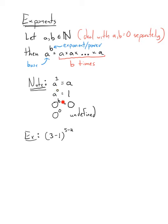Zero to any counting number power is just going to be 0. Take 0 and multiply it by itself however many times you like, you're still going to get 0.